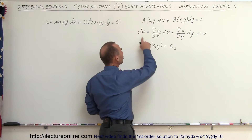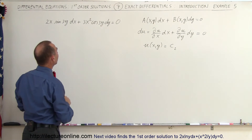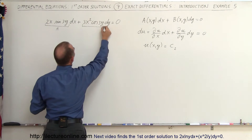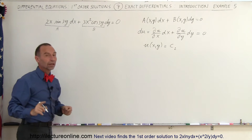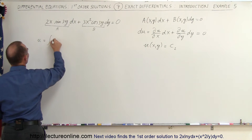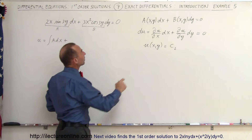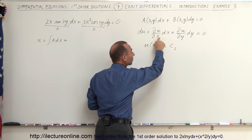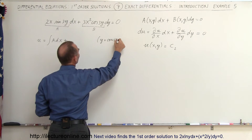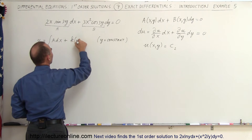Realizing that if du equals zero, u must therefore equal a constant. To solve this, we recognize that the solution u equals the integral of a dx plus a constant of integration. Since a is obtained by taking the partial derivative with respect to x, y is treated as a constant — so the constant of integration can be a function of y, written as k(y).